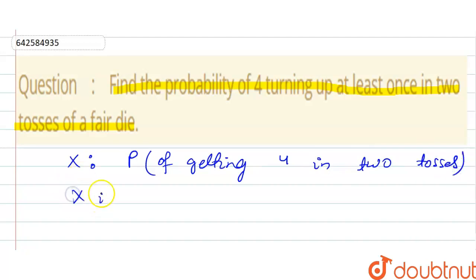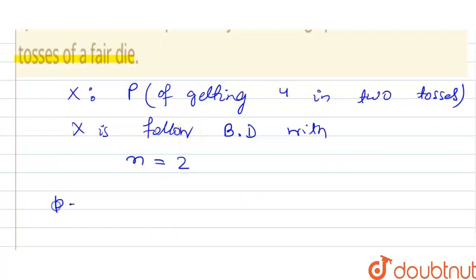And x also follows binomial distribution with n equal to 2. And the value of p will be, the total value is 6, favorable is 1, so 1 by 6.